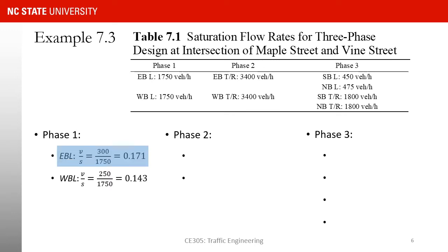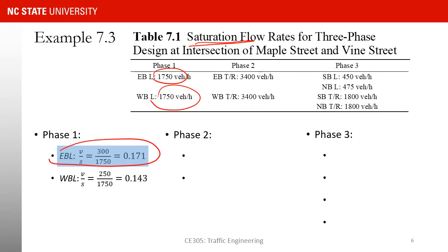For phase 1, eastbound left and westbound left are served. The V/S ratio for eastbound left: V is 300, S is 1,750, giving a ratio of 0.171. For westbound left, V is 250, S is 1,750, giving a ratio of 0.143. Among these two movements in phase 1, the critical one is the one with the higher ratio — that is eastbound left at 0.171.